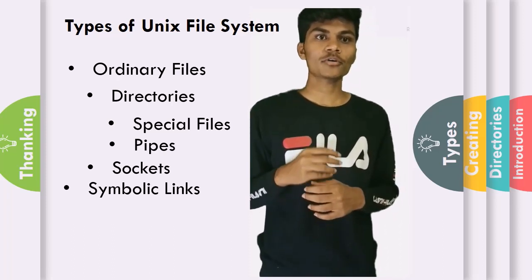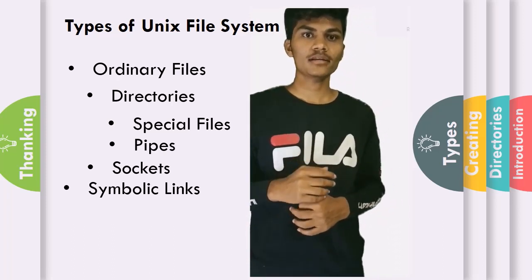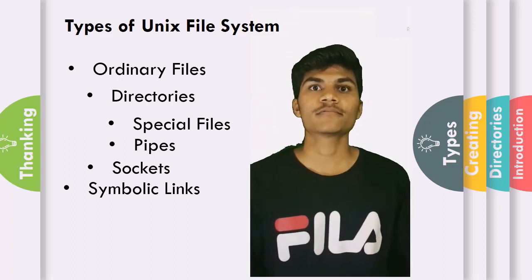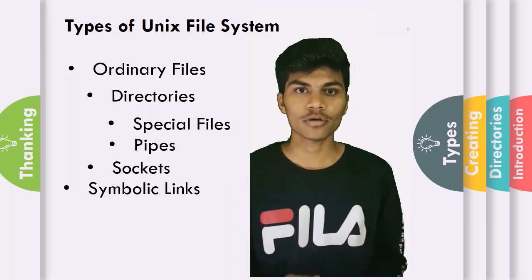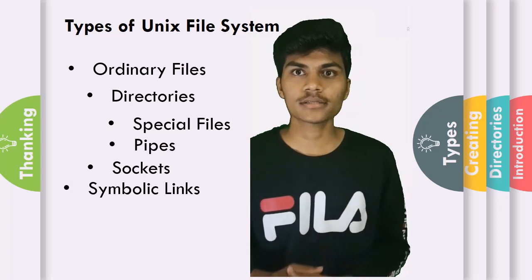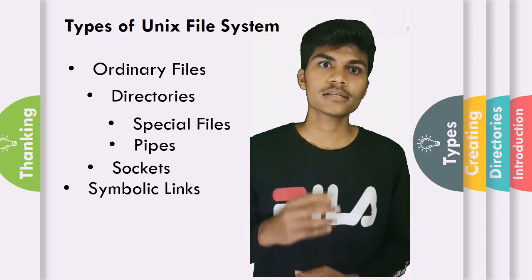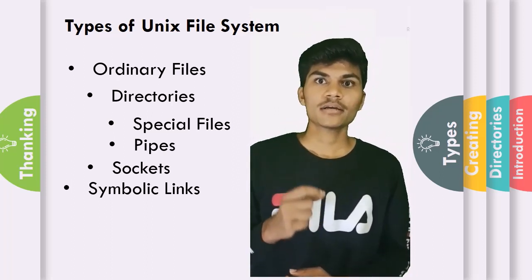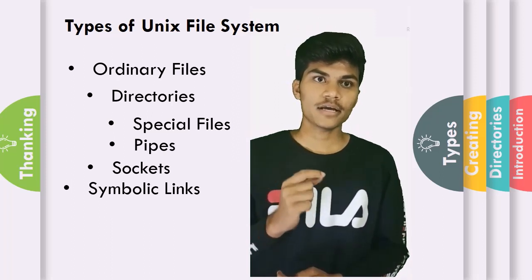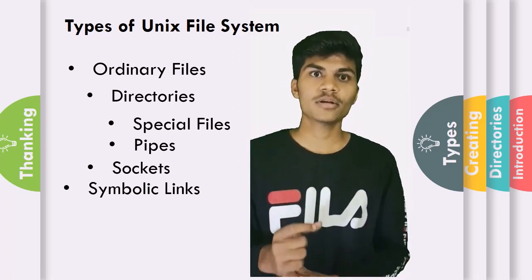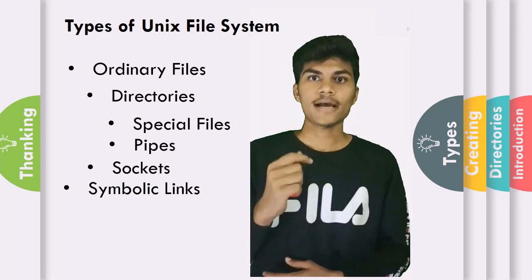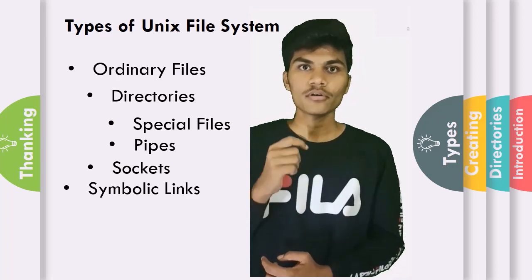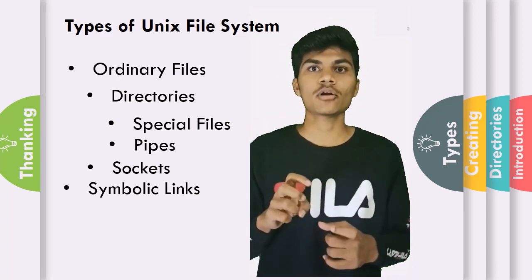Directories store both special and ordinary files. For users familiar with Windows or Mac OS, directories are equivalent to folders. A directory file contains an entry for each file and subdirectory that it houses. Each entry has two components: the filename, and the unique identity number for the file or directory, called the inode number.